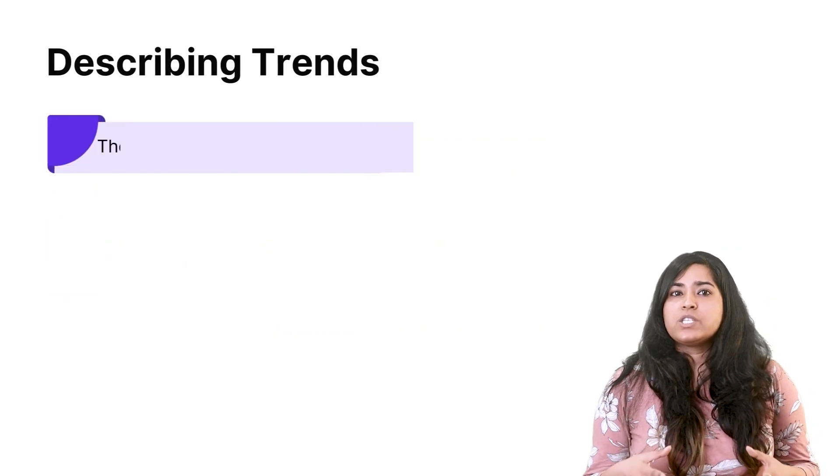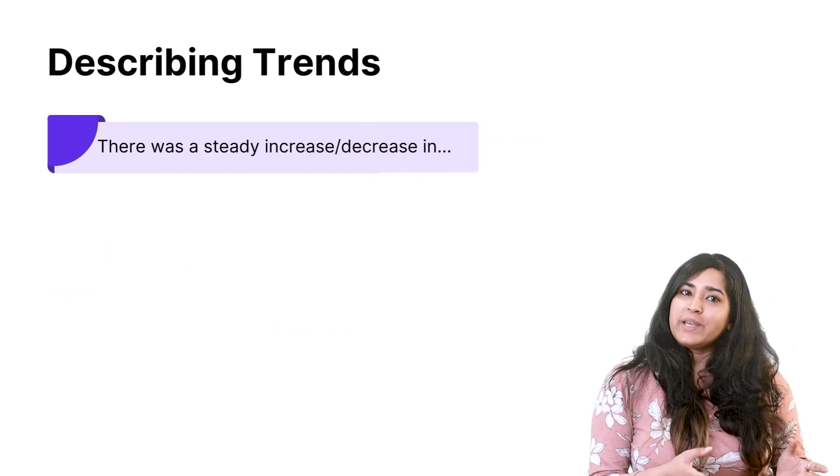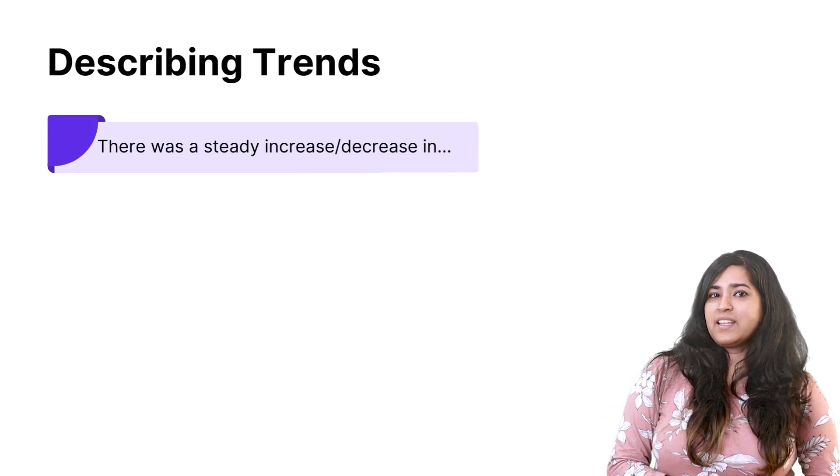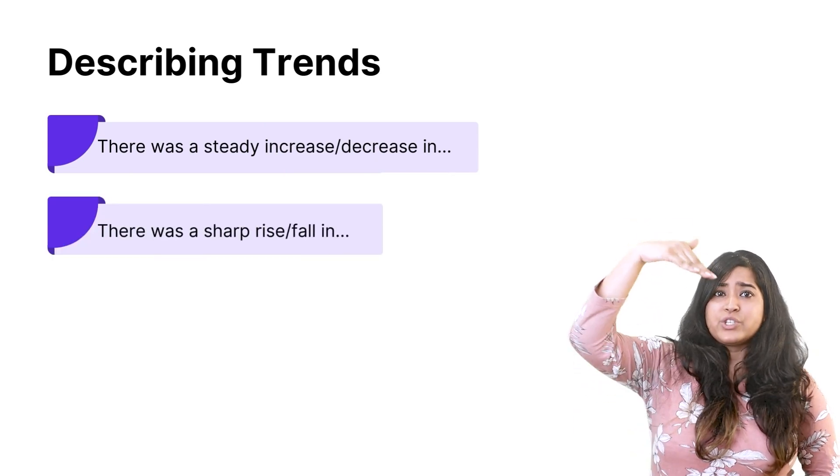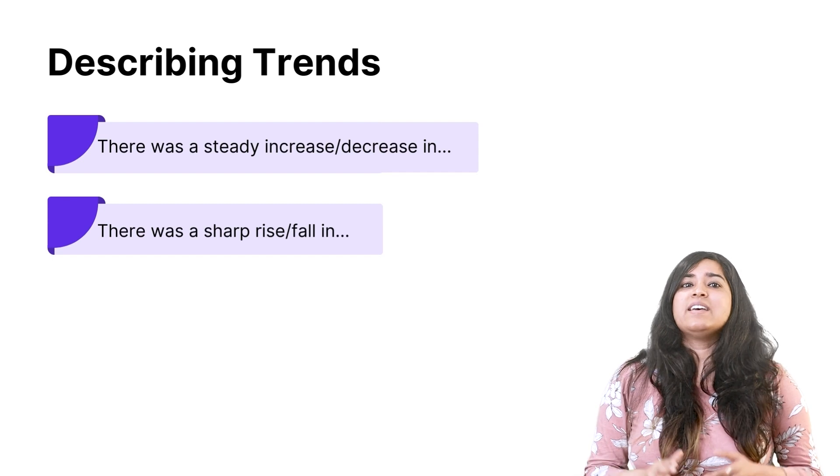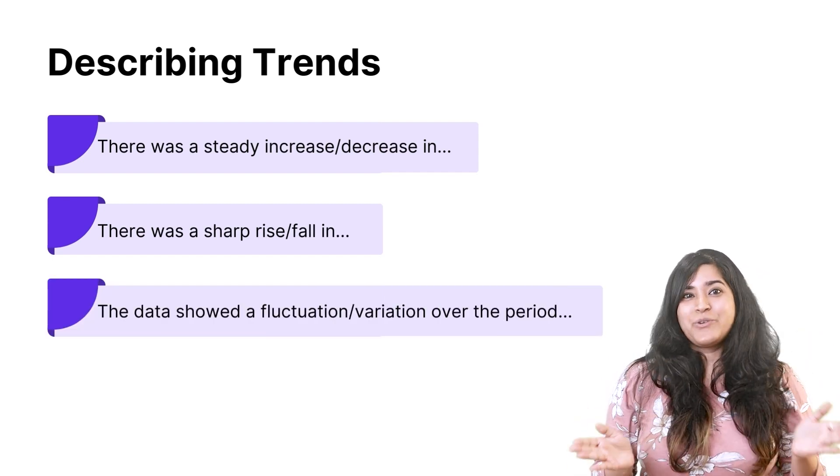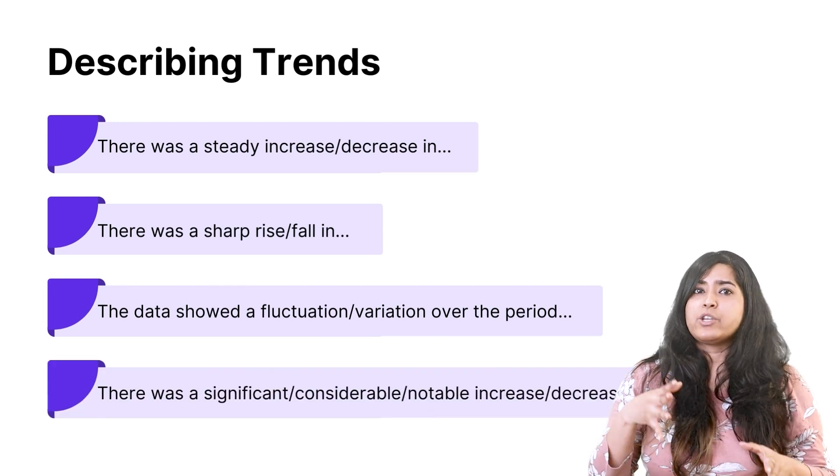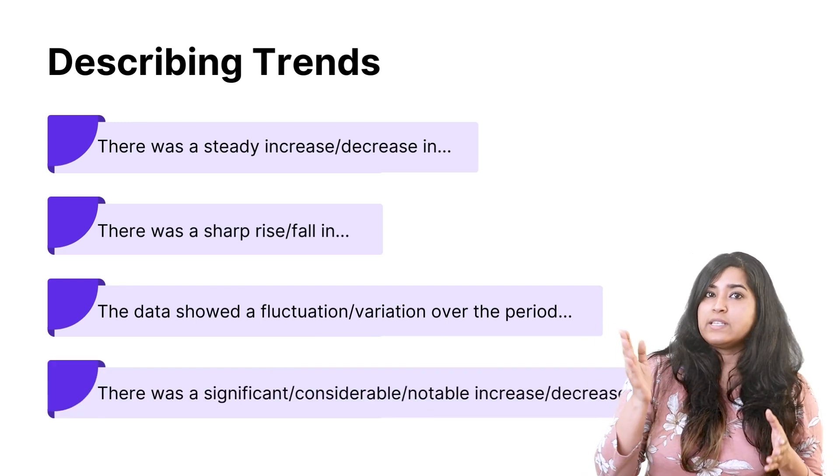Now when you want to go on to describing trends, you can use the following. There was a steady increase or decrease in. There was a sharp rise or a sharp fall in. The data showed fluctuation and or variation over the period. There was a significant and or considerable and or notable increase or decrease in.